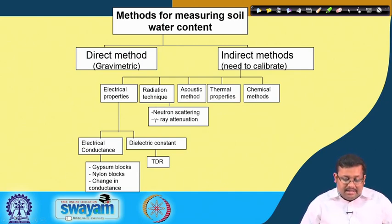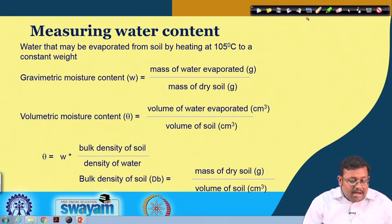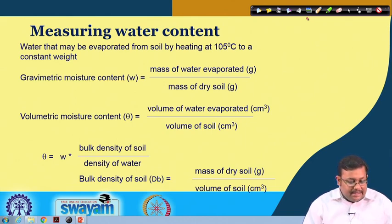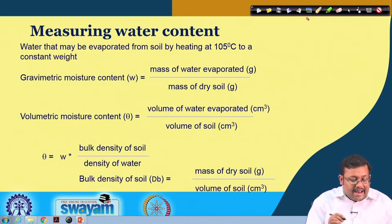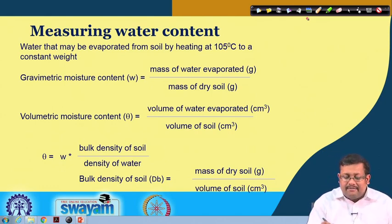We have already covered this slide in our last lecture, so let us move ahead and look at some measurement of water content. The direct method is called the gravimetric method. Measuring water content can be done by this gravimetric method — water may be evaporated from soil by heating at 105 degrees centigrade to a constant weight.